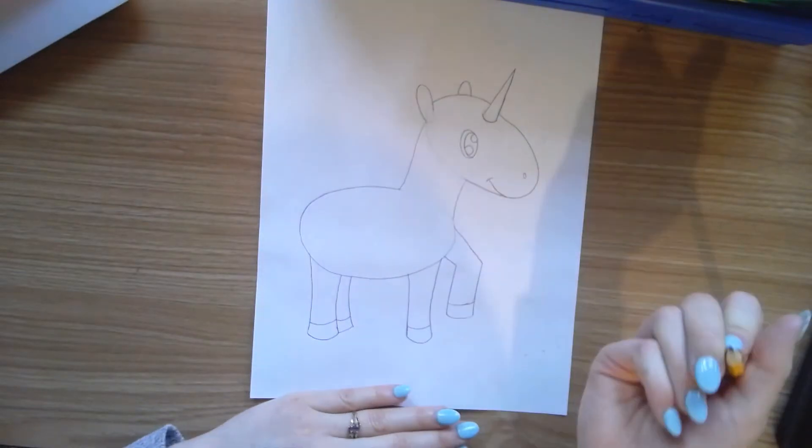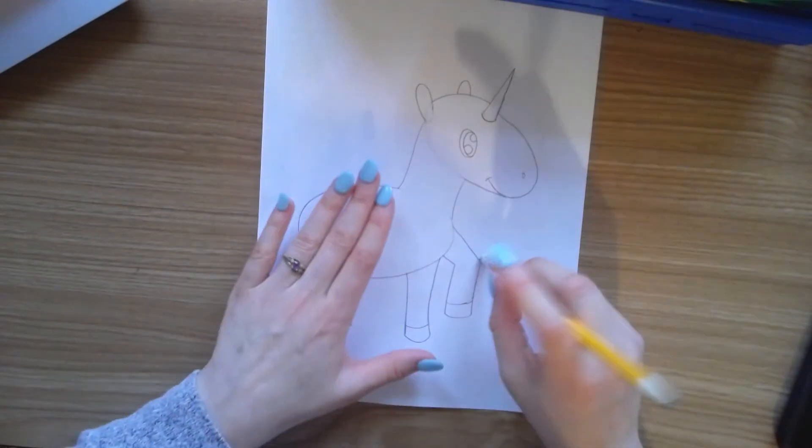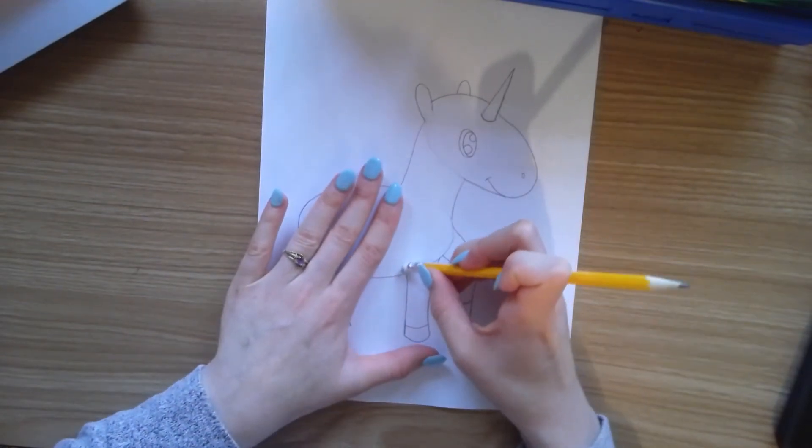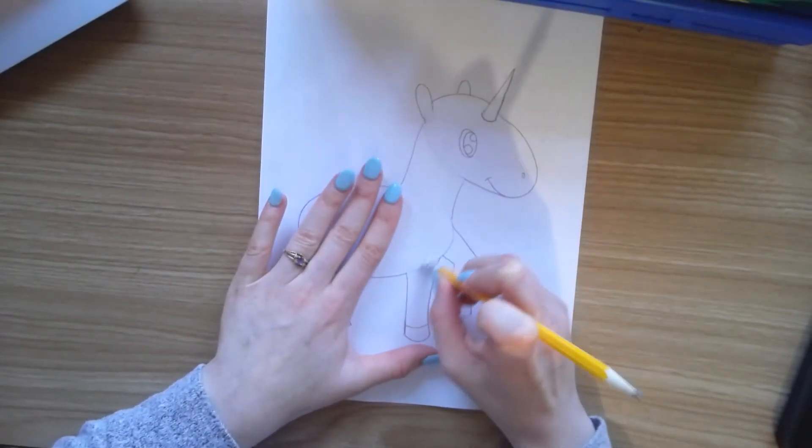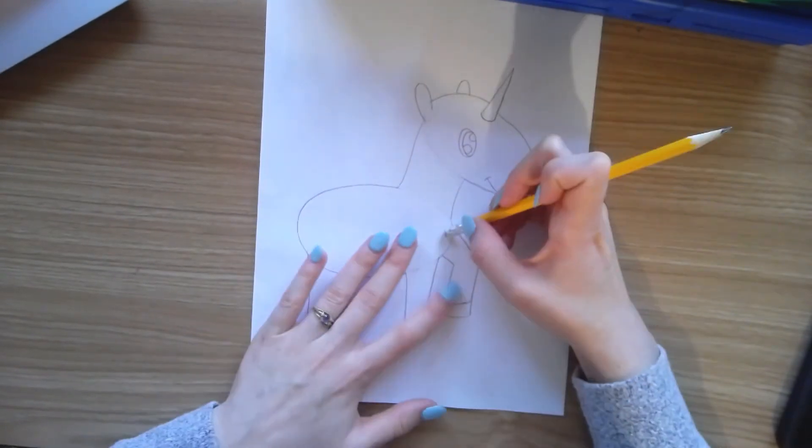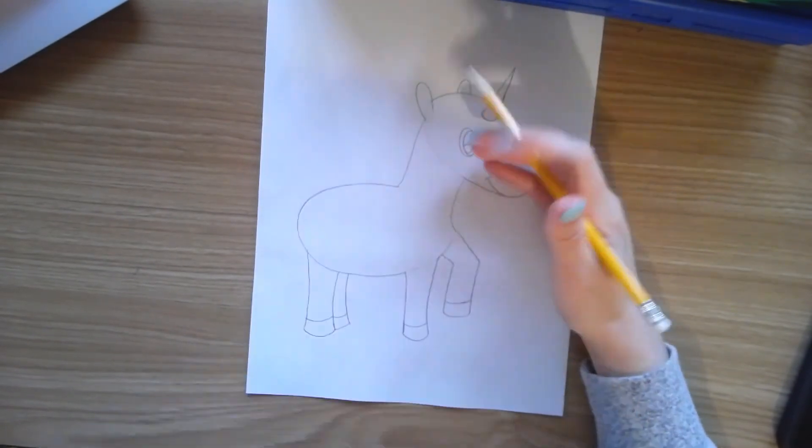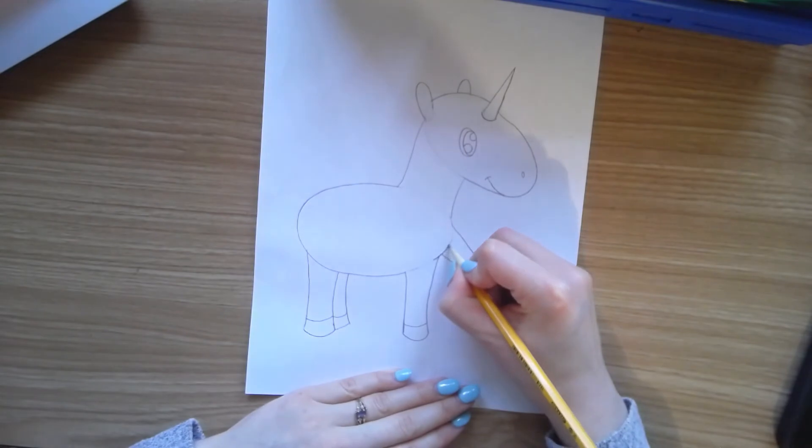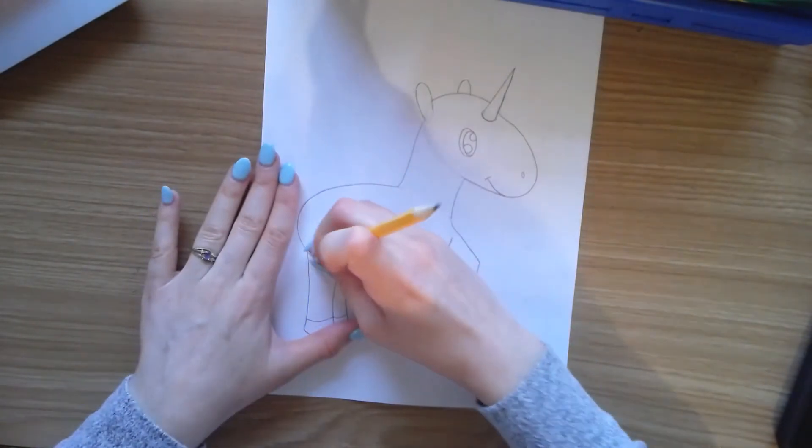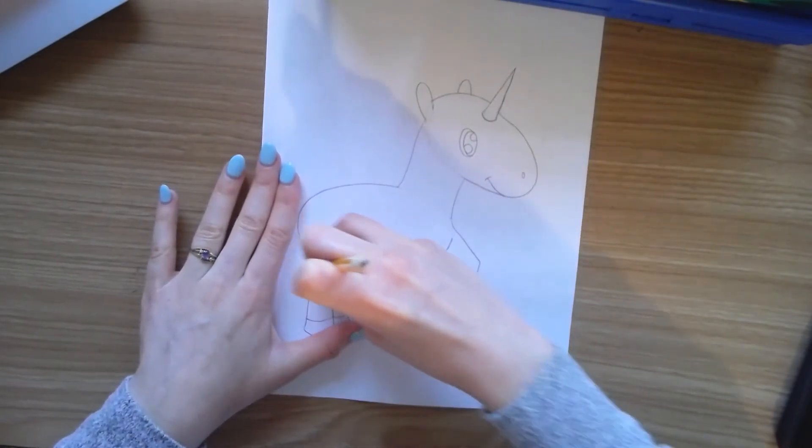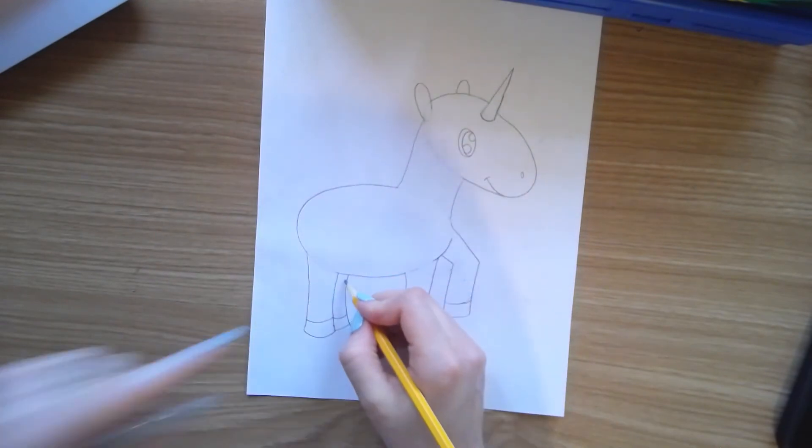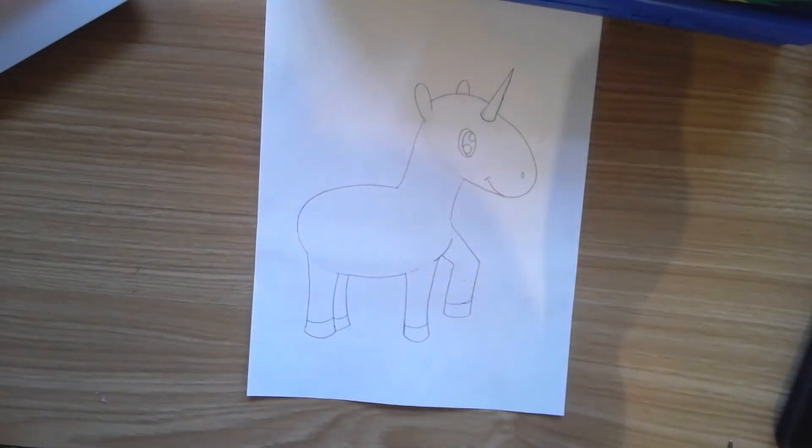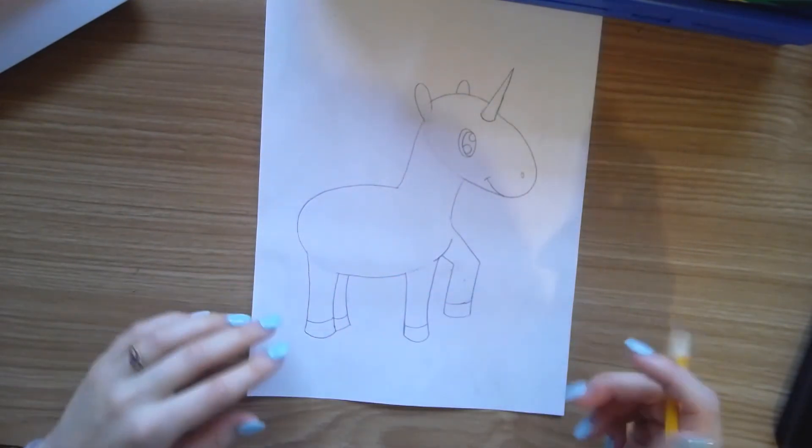All right, now I can erase the line here and just erase a little bit of the line there. And then erase this line, but not this one because it's behind it. So now I have my legs.